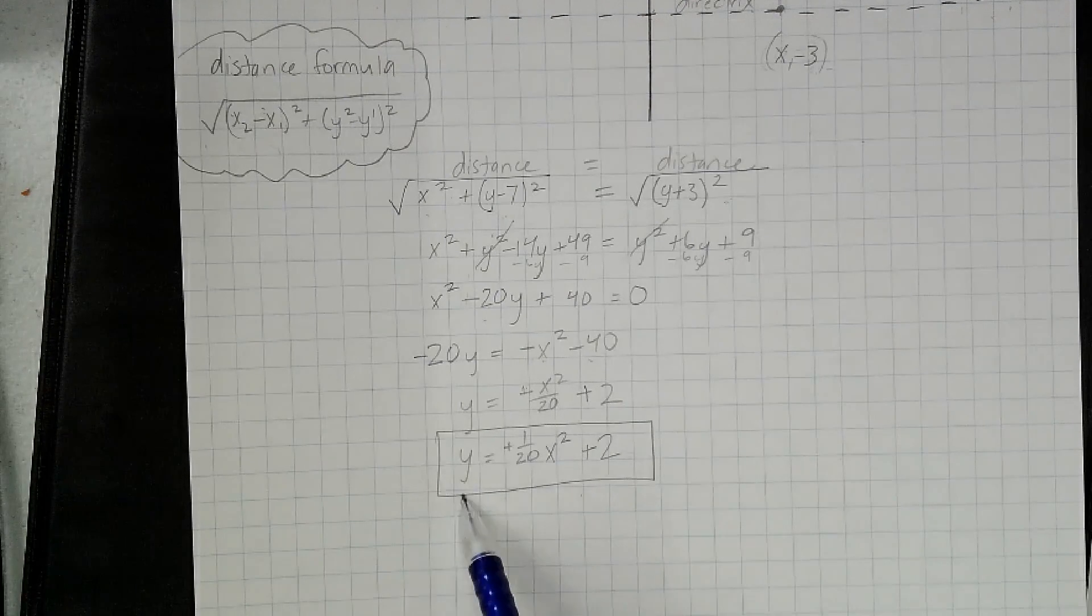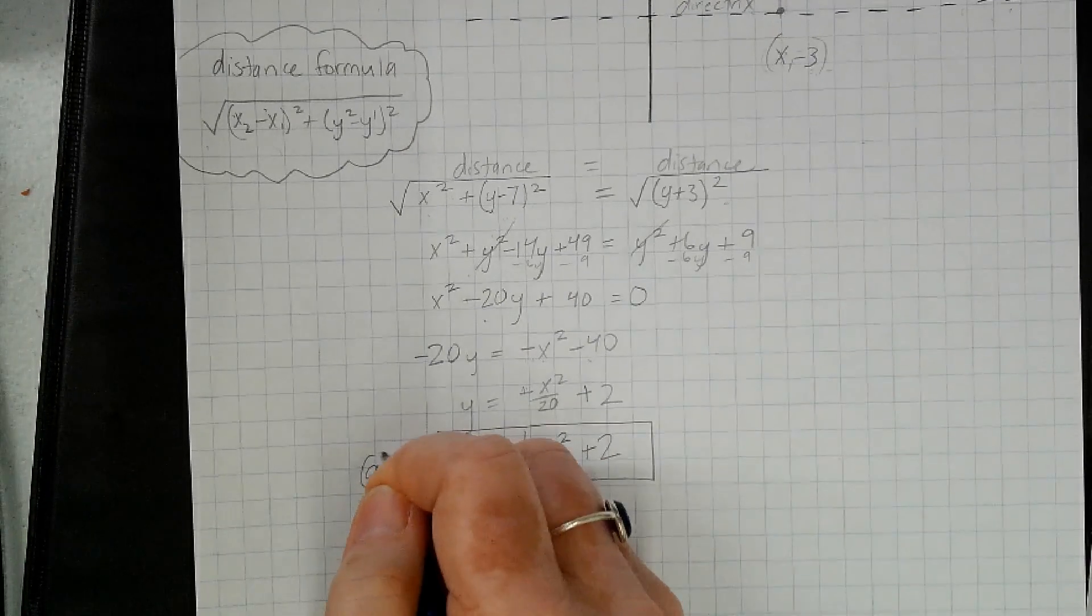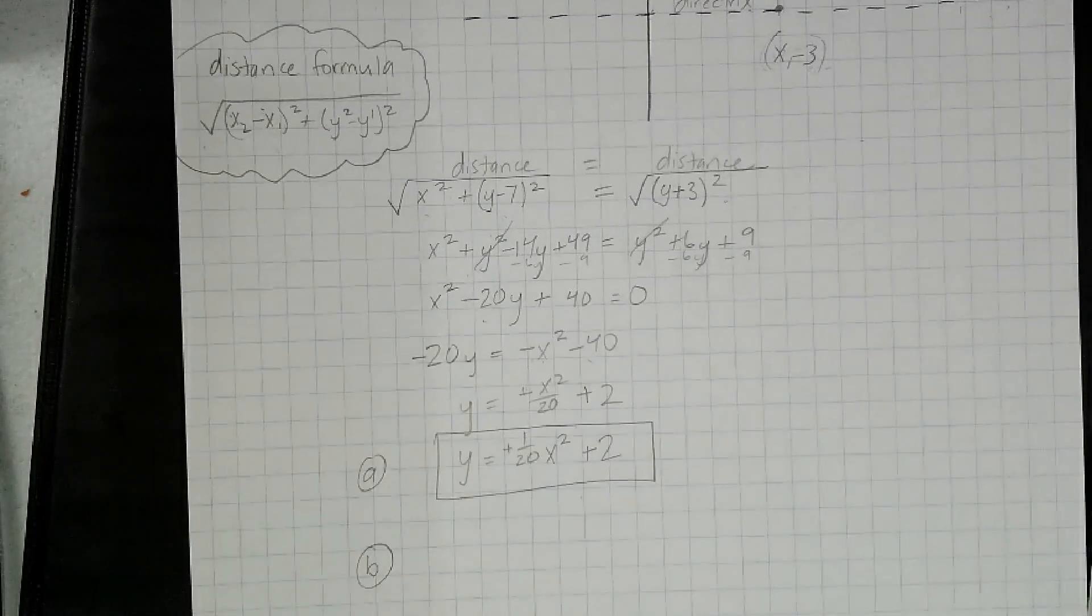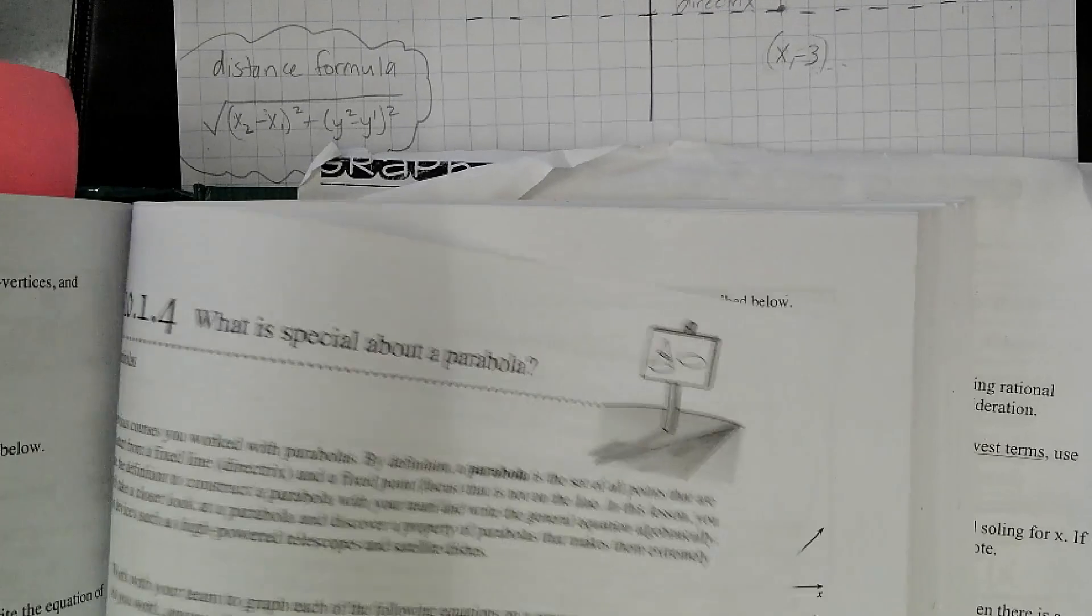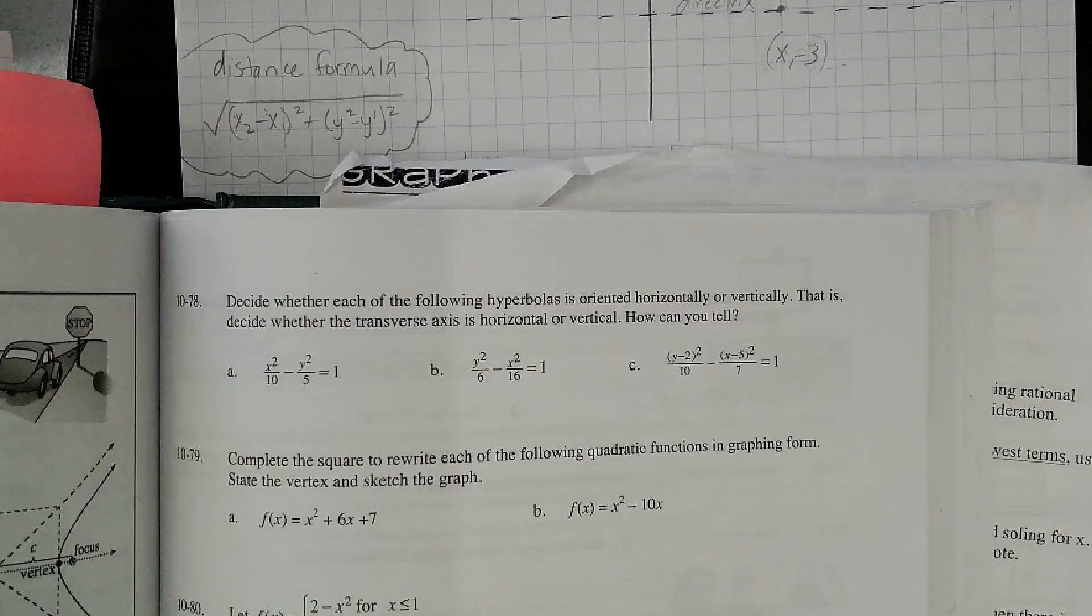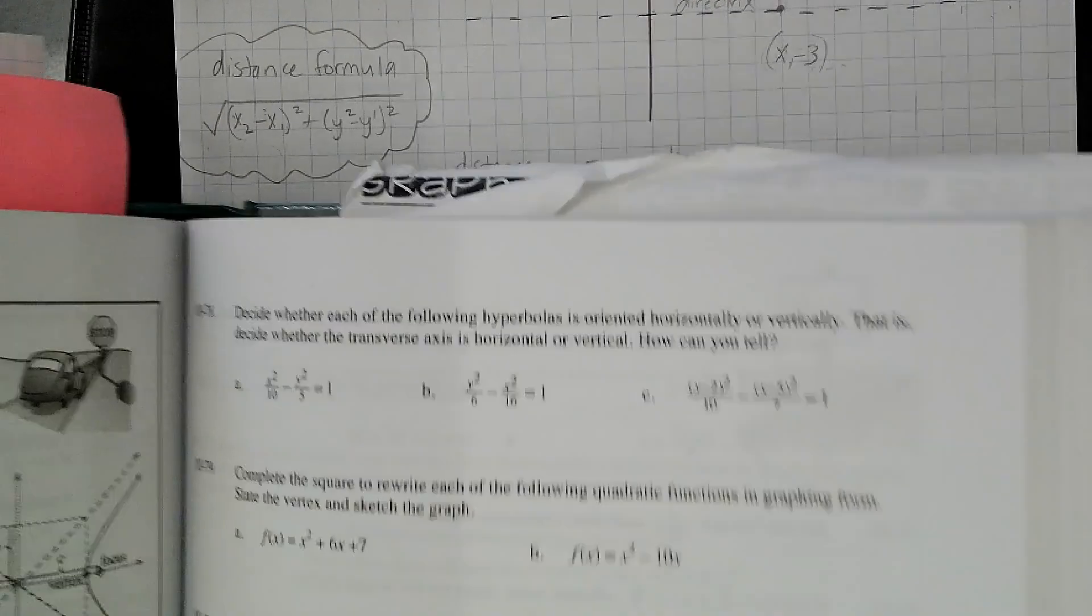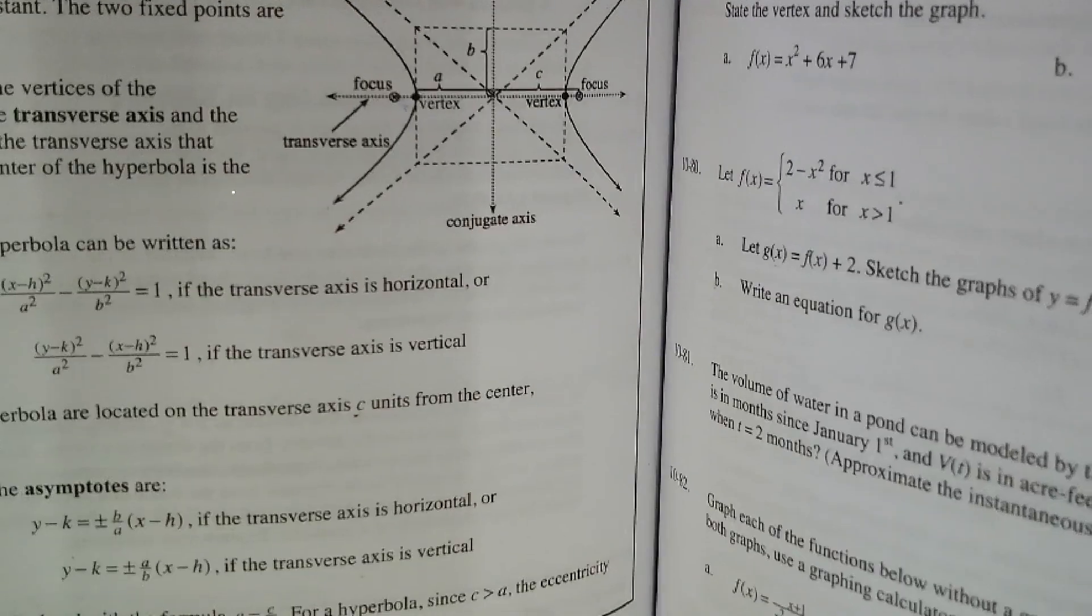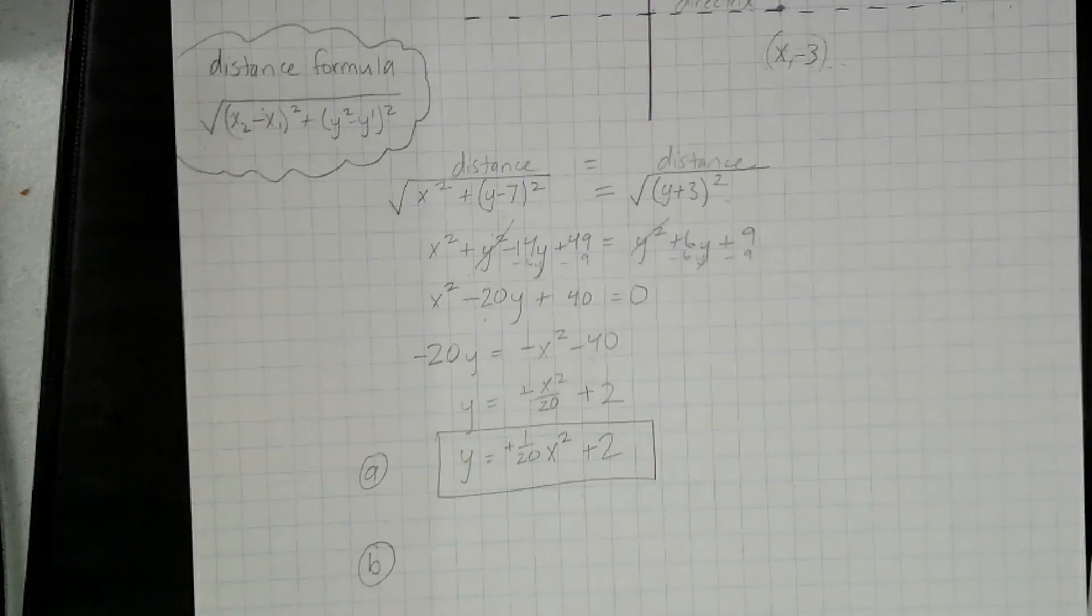So that's the answer I think to letter A. And then letter B said that we need to change the equation of the parabola to shift the graph 5 units to the right.